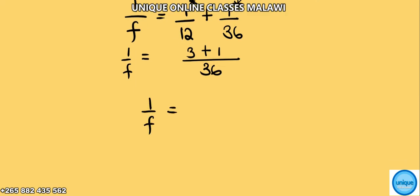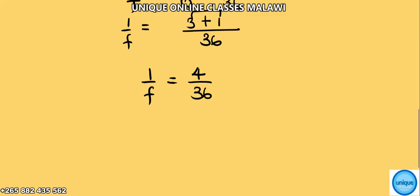Here is equal to 4 over 36, since 3 plus 1 is 4. And the next thing we need to do is cross multiplication: 4 times f equals 36. So to find the value of f we need to divide both sides by 4.